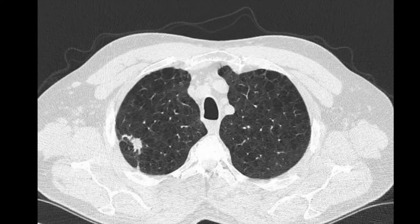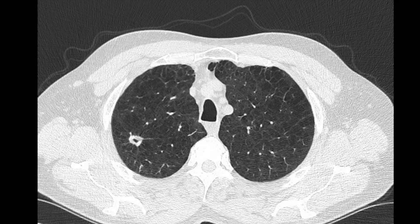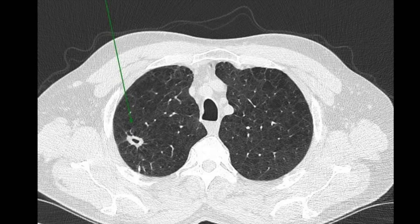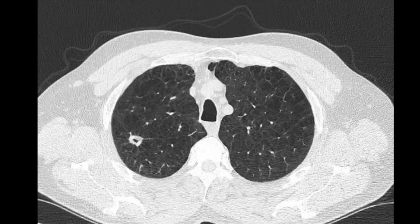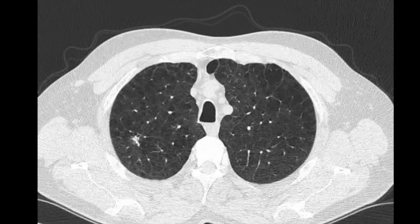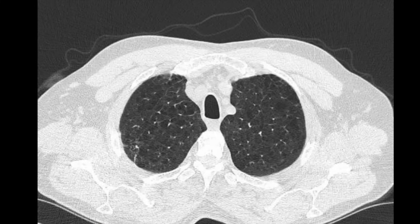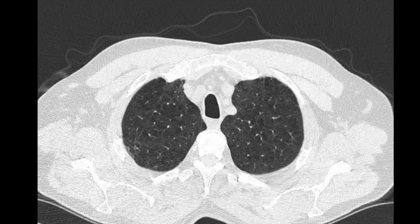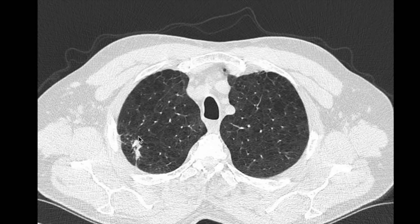As we scroll down we get to the abnormality here in the lung, which in fact is a cavity as pointed out by the radiologist. The cavity measures about 18 millimetres. It has some concerning features with some spiculation around the outside and there's no air fluid level. It's a relatively thick-walled cavity considering the small size of it, but towards the apex there may be some consolidation and nodular change.